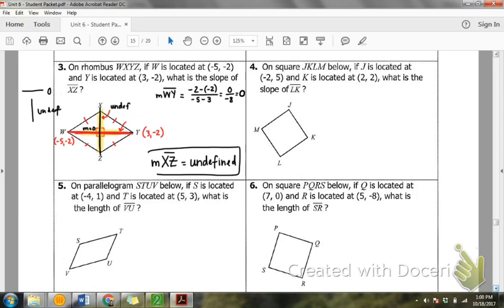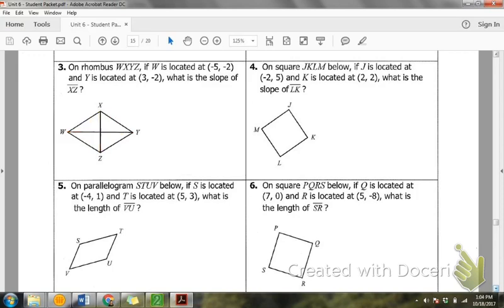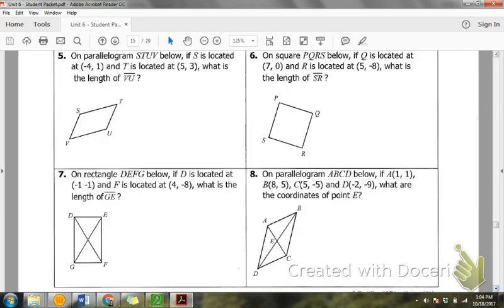Number 5. It says on parallelogram STUV below, if S is located at negative 4, 1. So let's go ahead and mark that. S is located at negative 4, 1. Mark that on your paper. Negative 4, 1. And T is located at 5, 3. How can you find the length of VU? Any ideas here? Well... Okay.